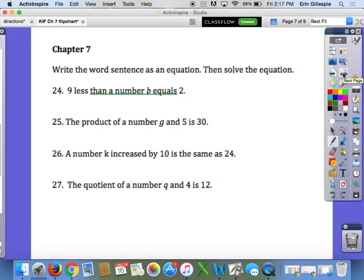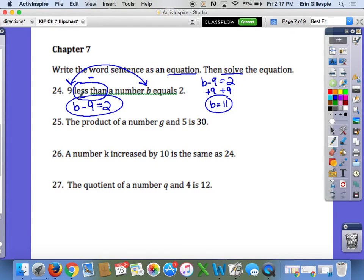Chapter 7: Write the word sentence as an equation, then solve. You need to write the equation and solve it, do both. Number 24: 9 less than a number B equals 2. Less than means subtraction and switches the order, so it's B minus 9 equals 2. To solve, add 9 to both sides to get B equals 11. I want to see both the equation and your solution. Number 25: The product of a number G and 5 is 30. Product means multiplication: 5G equals 30. To solve, divide both sides by 5, and you get G equals 6.